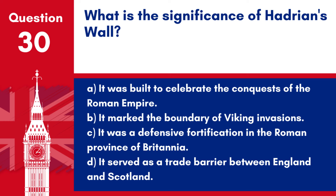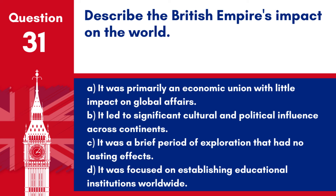Answer: c. It was a defensive fortification in the Roman province of Britannia. Built under the reign of Emperor Hadrian, it was intended to secure the frontier of the Roman Empire in Britain.